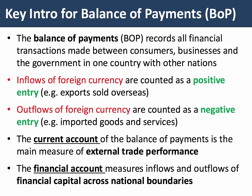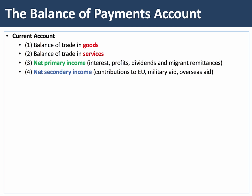The current account is the main measure of a nation's external trade performance. It is made up of four separate balances: first, the balance of trade in goods — tangible things such as cars, washing machines, and computers; second, the balance of trade in services such as health, education, tourism, and transport. Adding these two together gives us the balance of trade in goods and services.